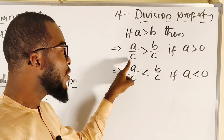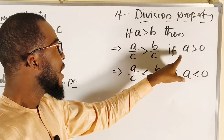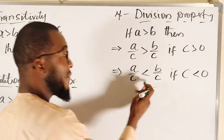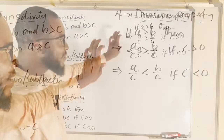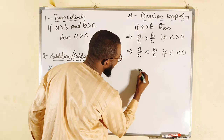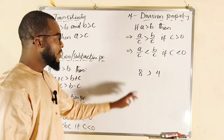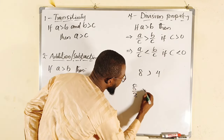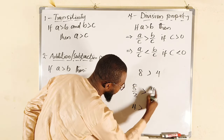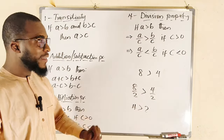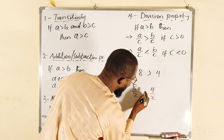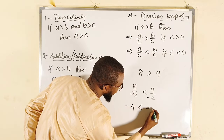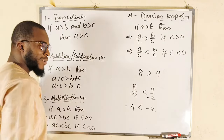For division: if a is greater than b, then a divided by c must be greater than b divided by c, provided c is positive. If c is negative, the direction of the inequality changes. For example, 8 divided by 2 is 4, and 4 divided by 2 is 2 — 4 is greater than 2. But with negative values, negative 8 divided by 2 is negative 4, which is less than negative 2.